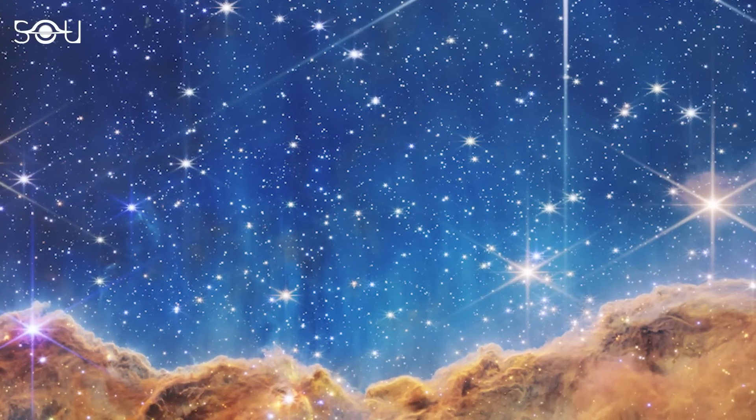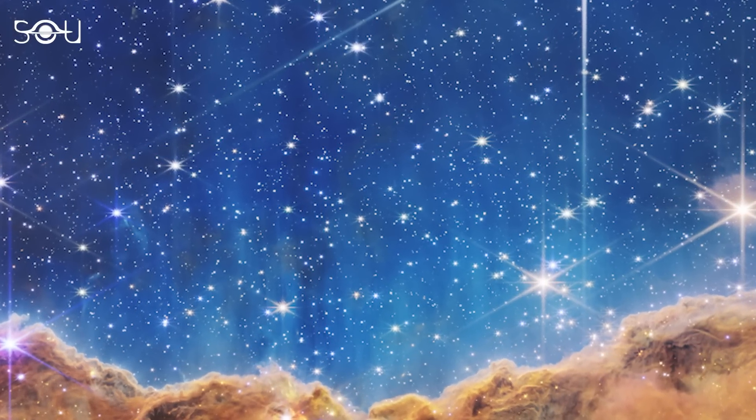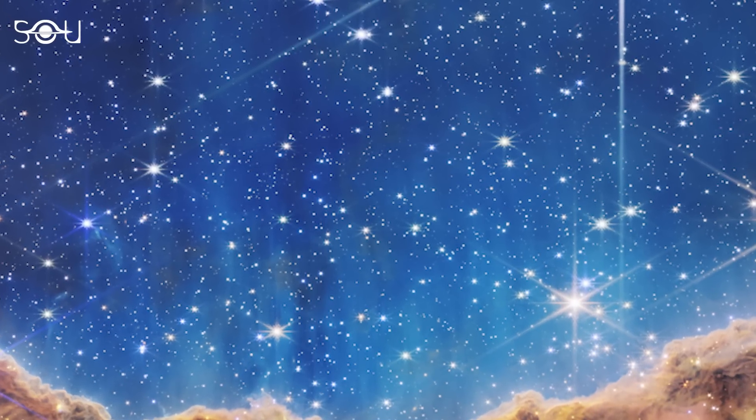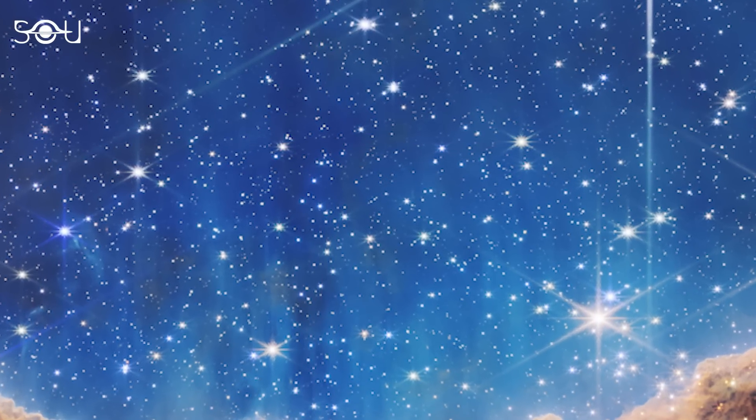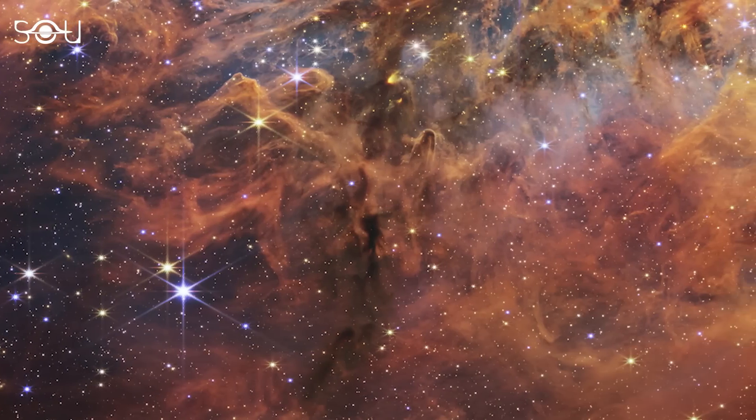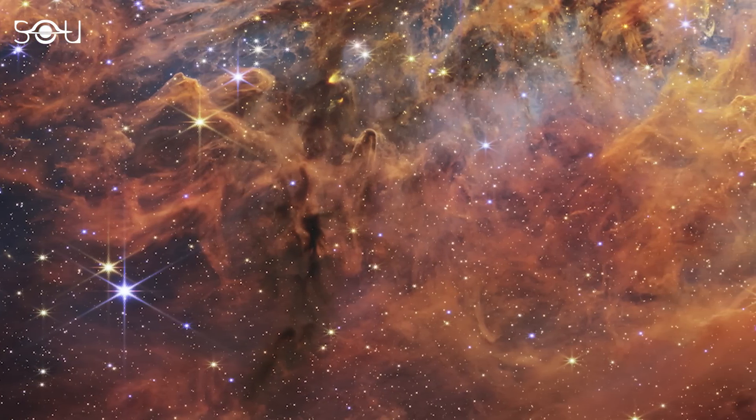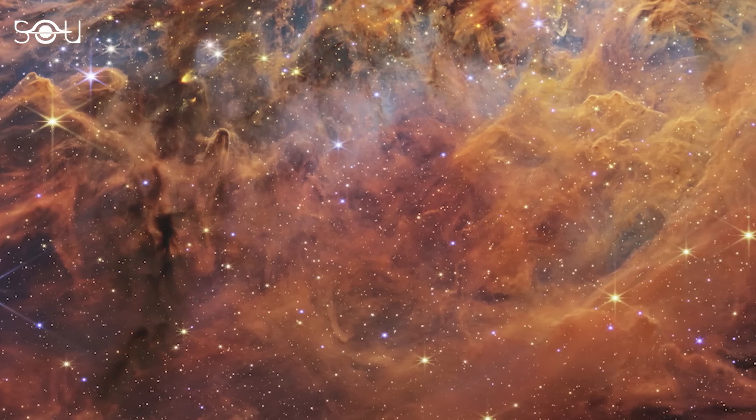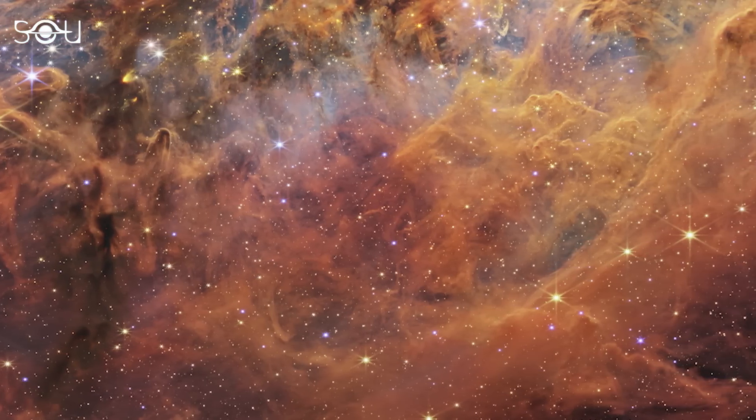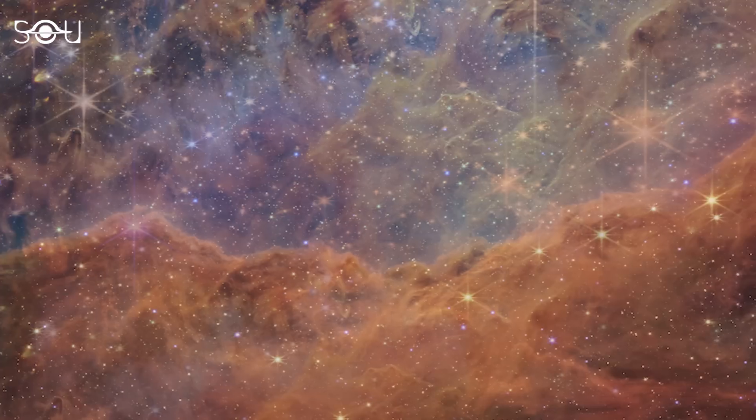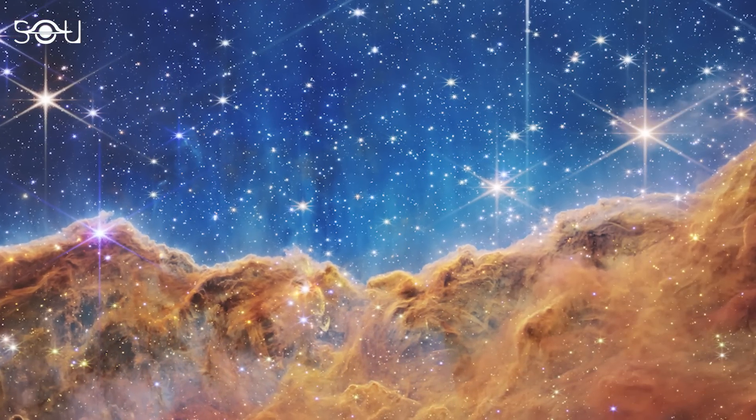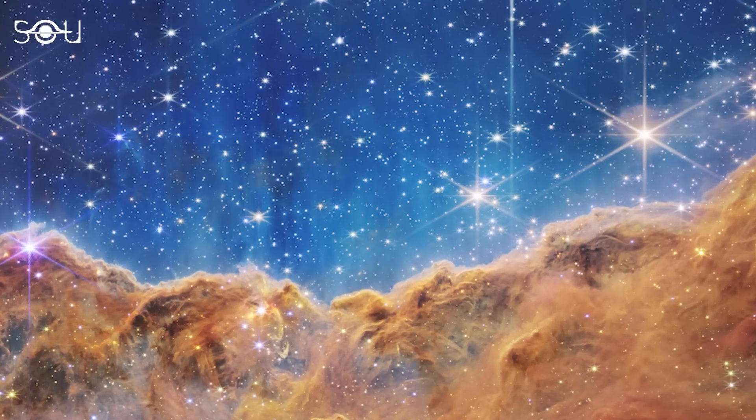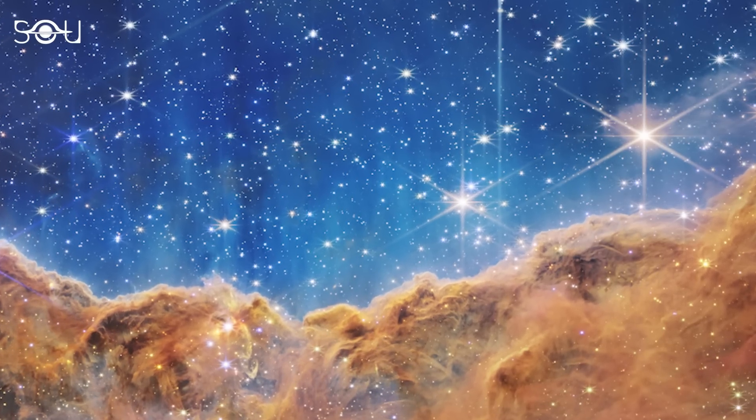With its crisp resolution and unparalleled sensitivity, NIRCAM has unveiled hundreds of previously hidden stars and even numerous background galaxies in this image. We can see bubbles and cavities blown by the intense radiation and stellar winds of newborn stars. Also, some protostellar jets of golden hue are being blown out by the infant stars. There are hot stars on the top rim of the image, and their radiation pushes down the dust and gas to further condense it into more stars and baby planets.